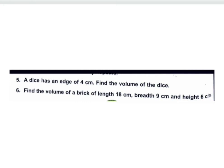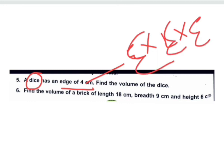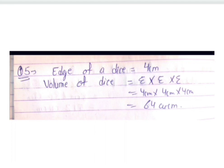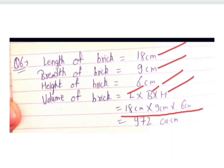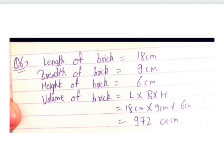Question five: a dice has an edge of 4 cm. A dice is cube-shaped, so volume = edge × edge × edge = 4 × 4 × 4 = 64 cubic centimeters. Question six: a brick is cuboid-shaped. Length is 18 cm, breadth is 9 cm, height is 6 cm. Volume = 18 × 9 × 6 = 972 cubic centimeters. That's all students, I hope you understood.